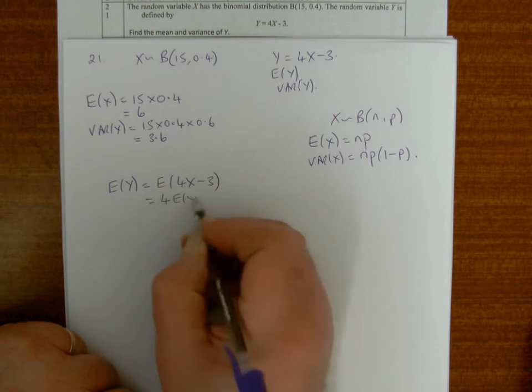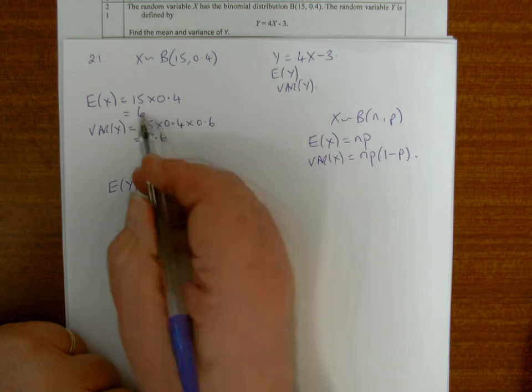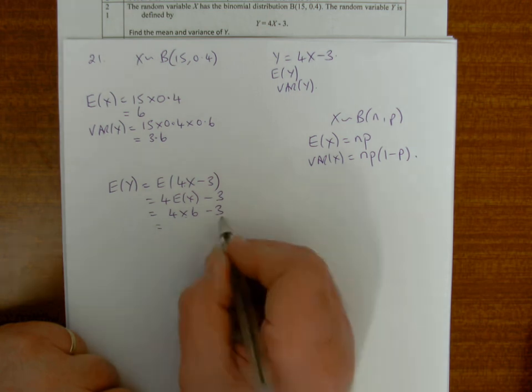Which is 4 times 6 take away 3, 24 take away 3, which equals 21.